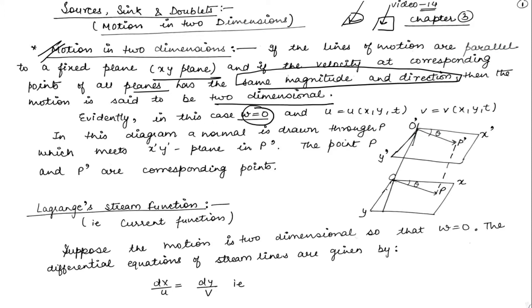That means u, v, w correspond to x direction, y direction, and z direction. So w value will be 0. u will be a function of x, y, and time t. v will depend on x, y, and t.